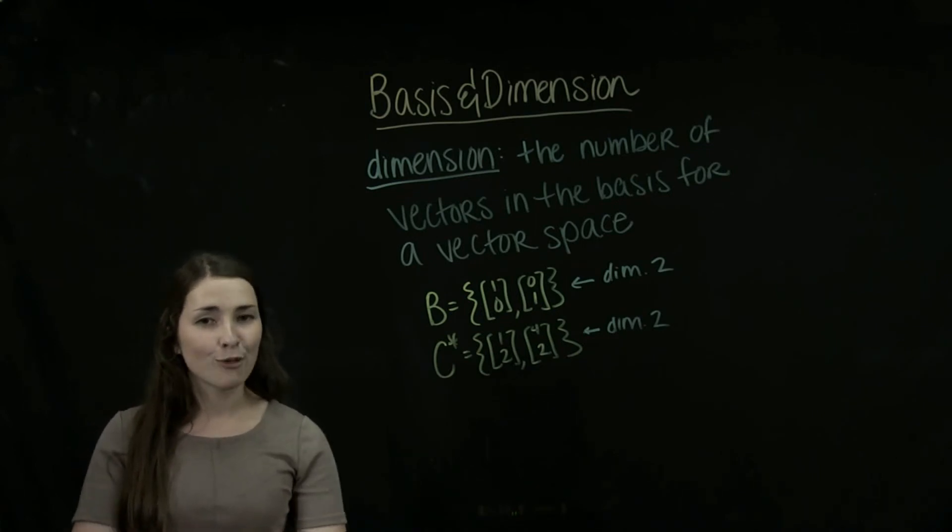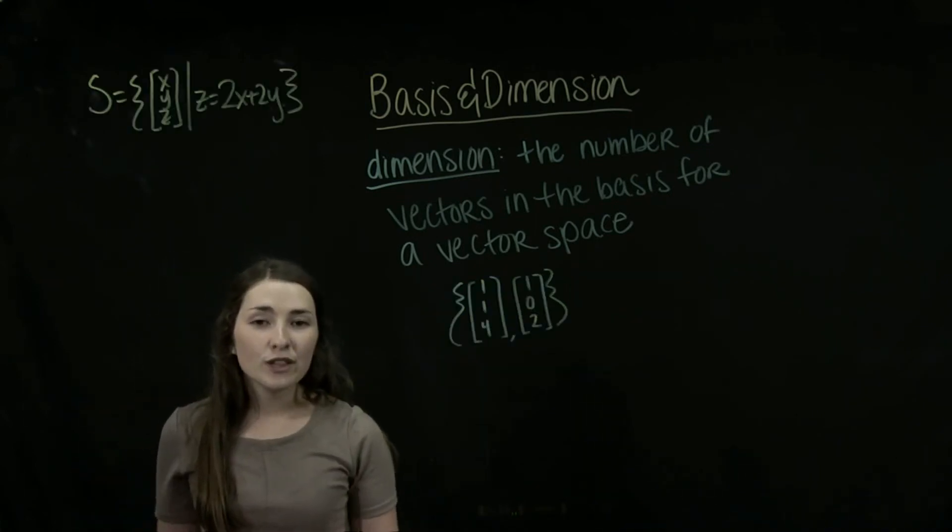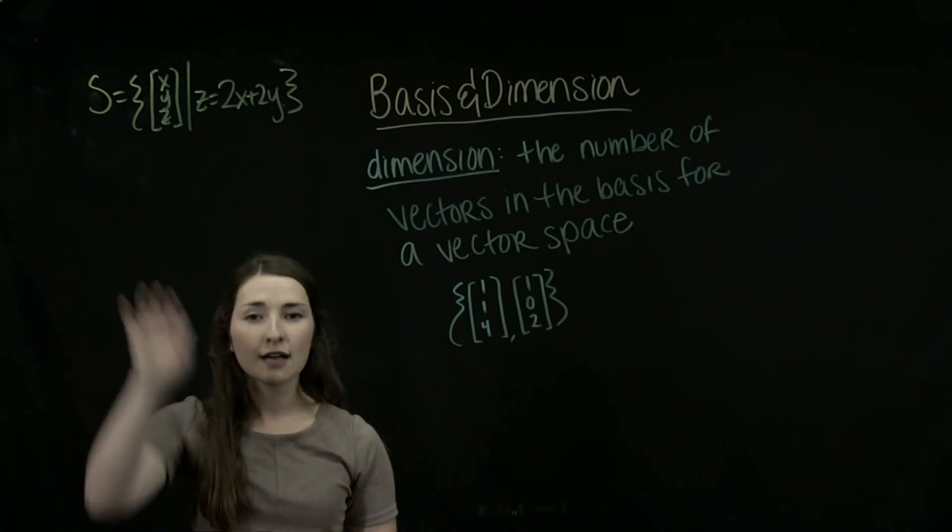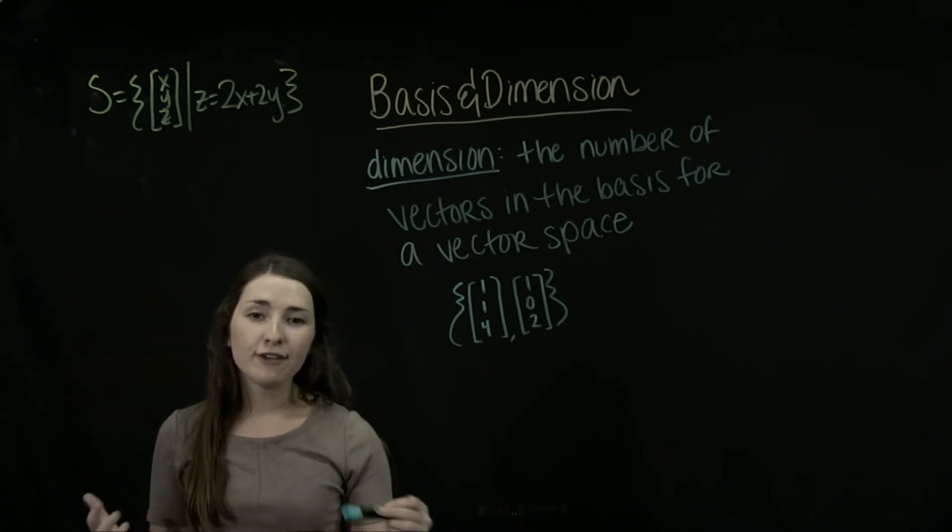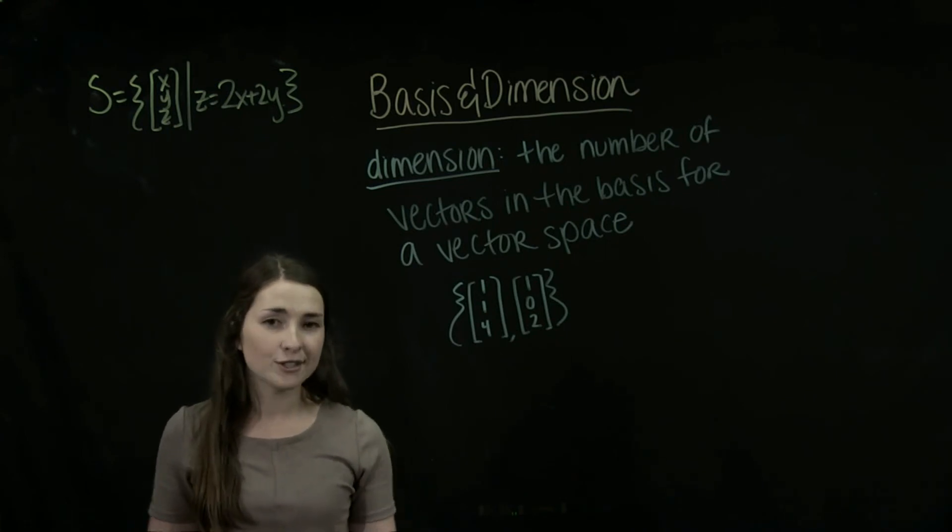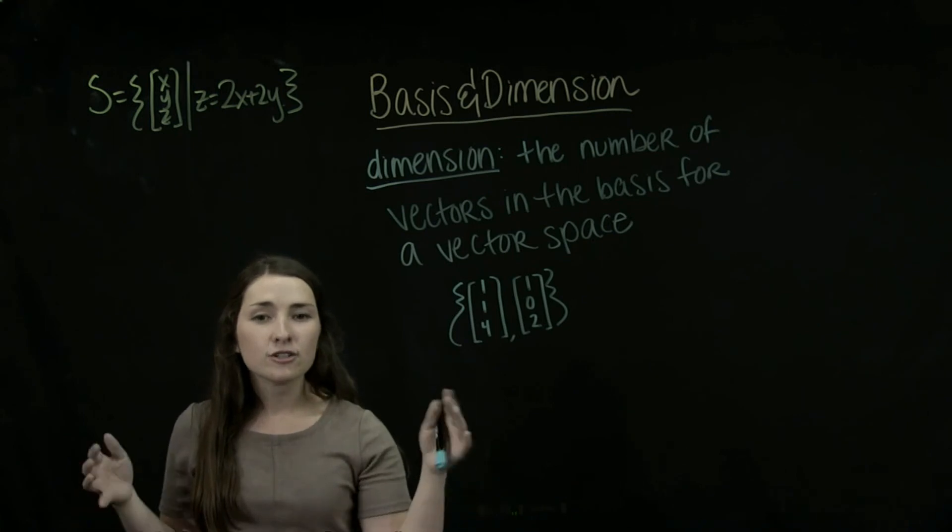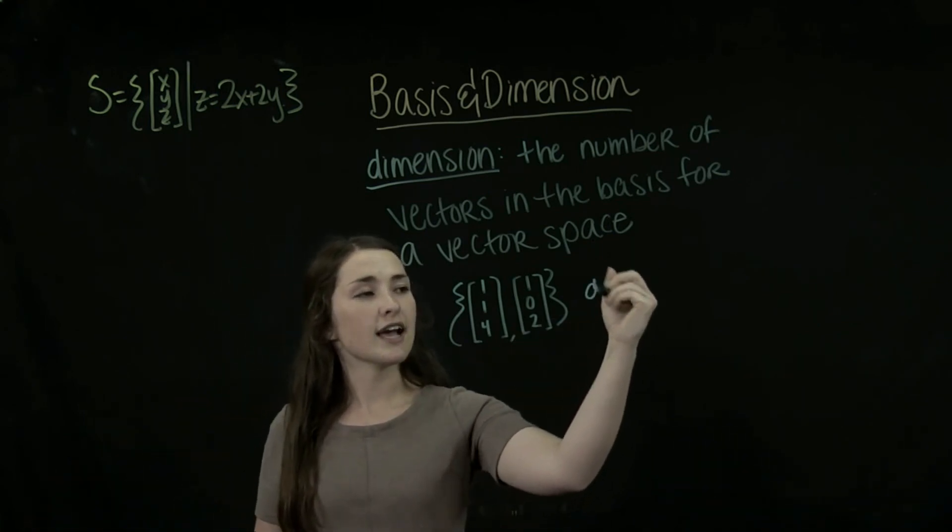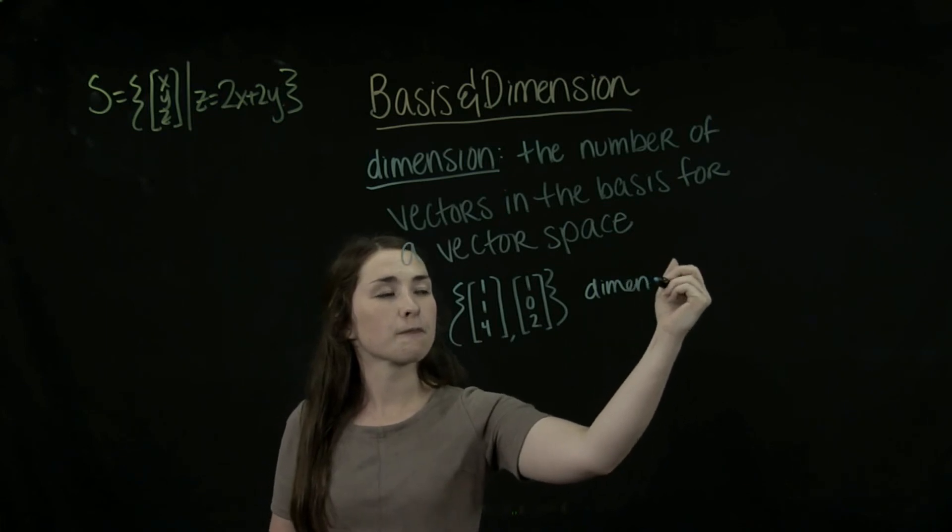So now let's look at the other basis that we explored here. So we looked at this set here as the basis for our subspace of R3 of vectors of x, y, and z such that z is equal to 2x plus 2y. So we decided that this was a basis, so what's its dimension? It has two vectors in it, so this has dimension 2.